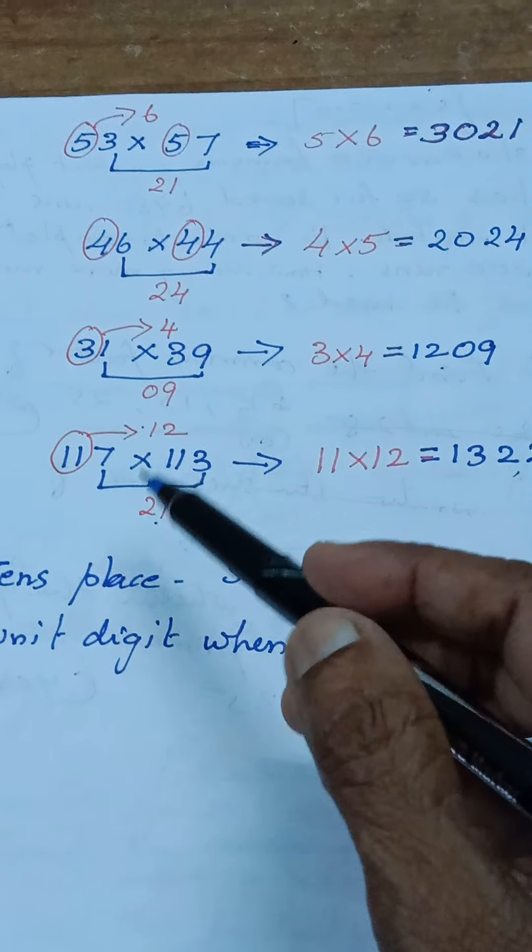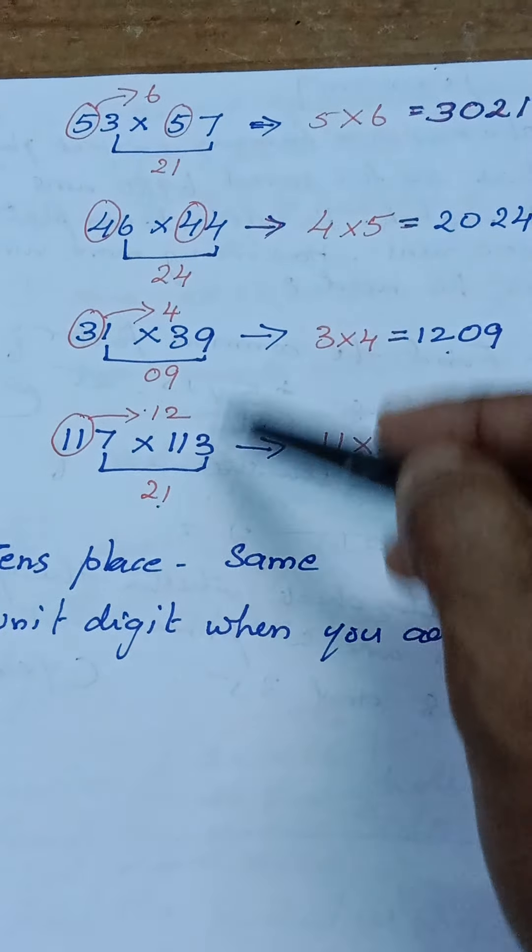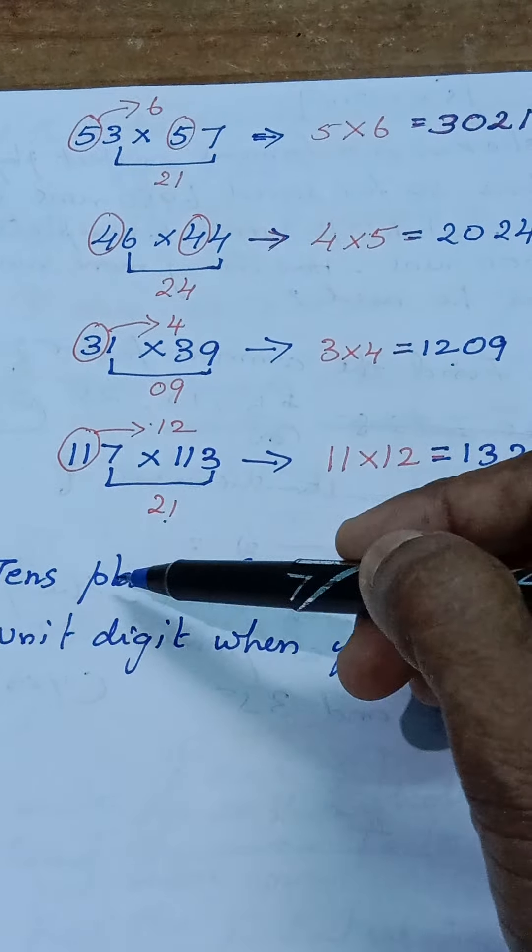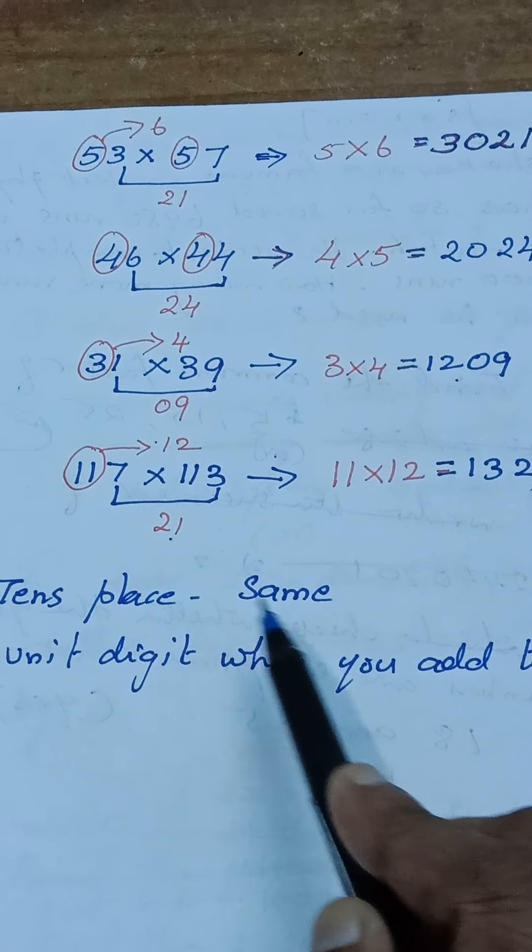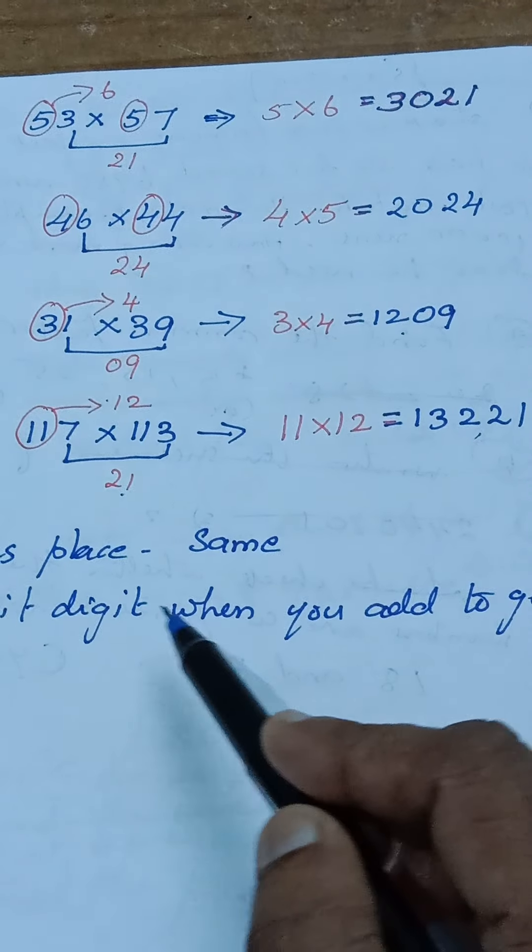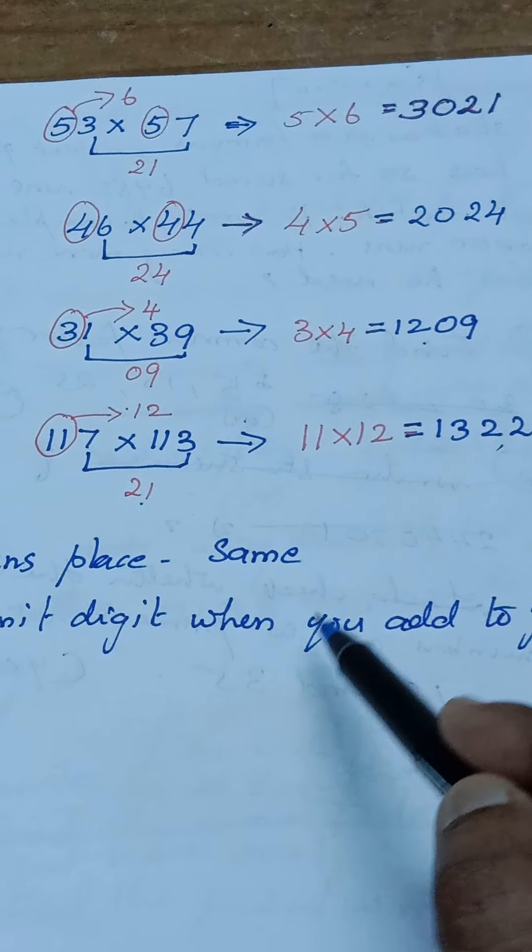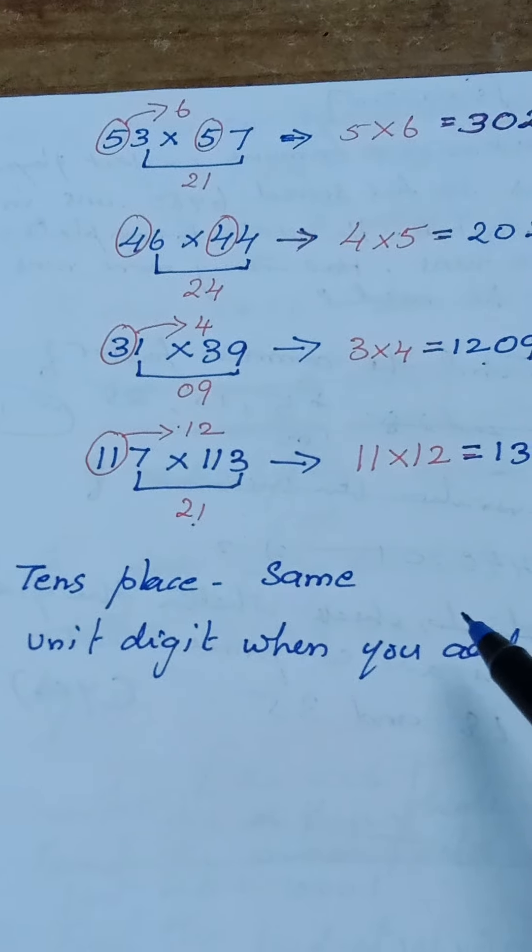So this type of multiplication is applicable only if the tens place should be same and when I'm adding the unit digits I must get the answer 10. Now let us see how we can multiply this type of numbers within two seconds.